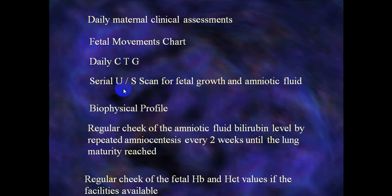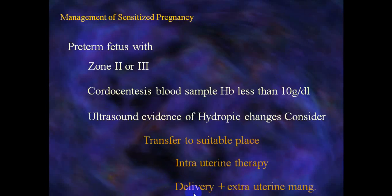Serial ultrasound, fetal growth biophysical profile, and regular check-up of amniotic fluid with repeated amniocentesis every two weeks are performed until lung maturity is assured and delivery can occur. Regular check-up of fetal heart, hemoglobin, and hematocrit values are done. If facilities are available, delivery will proceed. For a preterm fetus in Zone 2 or 3 of the Liley chart, cordocentesis is indicated.